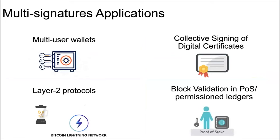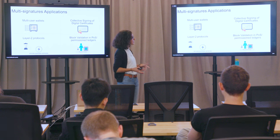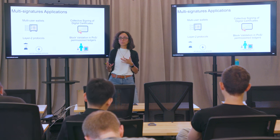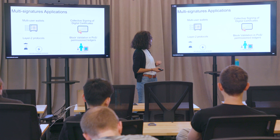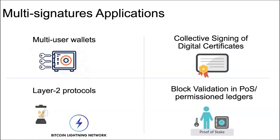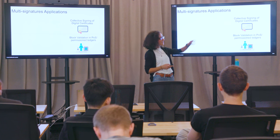Why do we care about multisignatures? Multisignatures have various applications. In the non-blockchain setting, we've seen uses in collective signing of digital certificates. Most prominently in the blockchain setting, we've seen applications in multi-user wallets where you might want to authorize a payment by requiring a certain number of signers. Also in various layer 2 blockchain protocols like mixing protocols or the Lightning Network, and in proof-of-stake protocols where a set of validators sign together a new block on the blockchain.